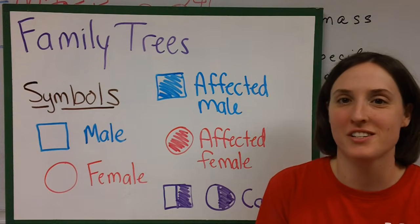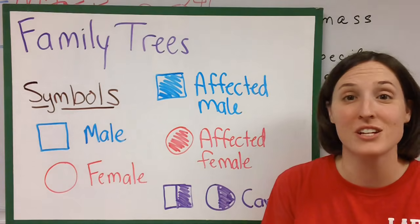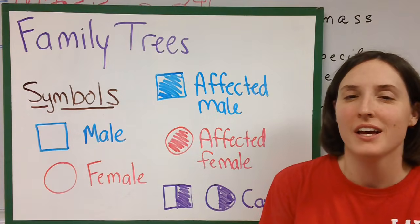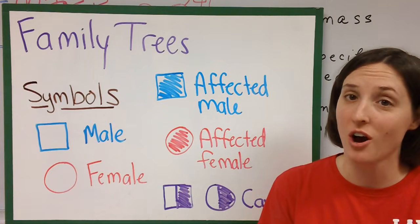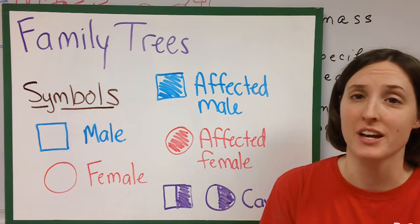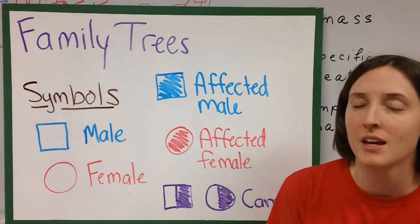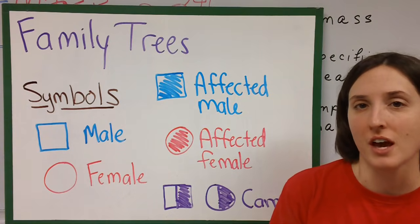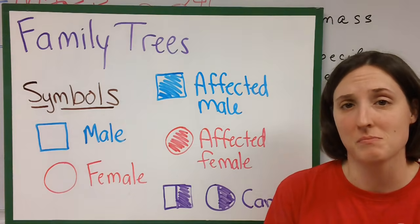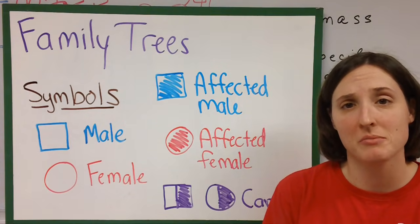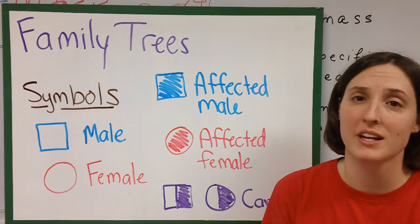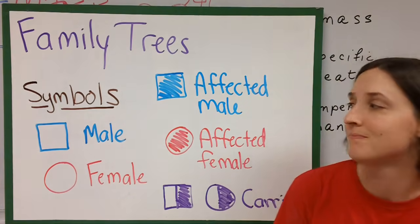Hi, today we're going to talk about family trees. In biology we call a family tree a pedigree chart. So let's take a look at what the symbols mean when we're trying to represent who's related to who.